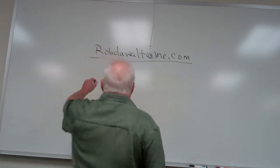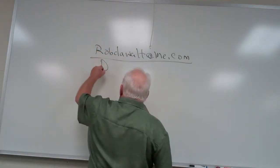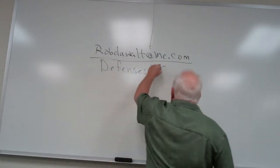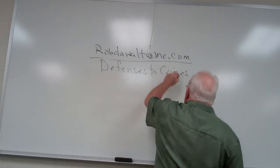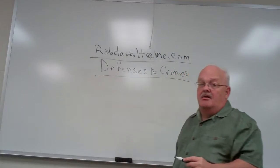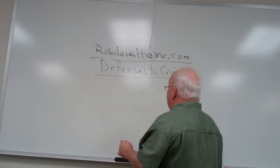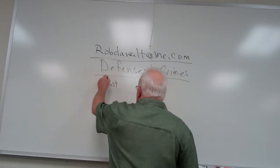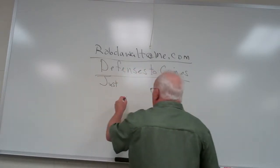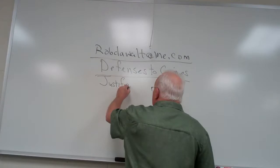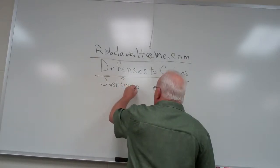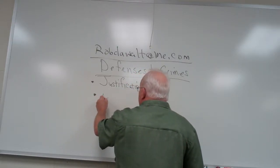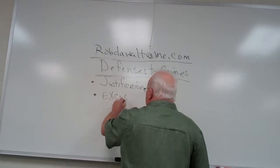Today we're going to talk a little bit about defenses to crimes. So someone alleges that a defendant committed a crime. There are a few different things that defendants can do, or that a lawyer for a defendant can do. Most of these defenses break down as either justifications or excuses.